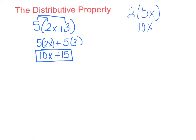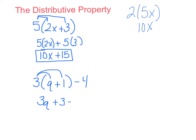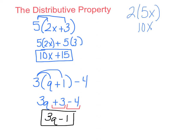Here's an example using the distributive property: 3 times the quantity q plus 1, minus 4. You first get rid of the parentheses — you cannot add q plus 1 because they are not like terms. So take 3 times q to get 3q, and 3 times 1 to get 3. The minus 4 comes down; we do not multiply it since it's not in parentheses. Then 3 and negative 4 are like terms (constants), giving negative 1. The answer is 3q minus 1.